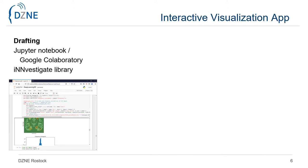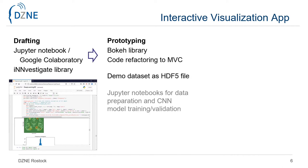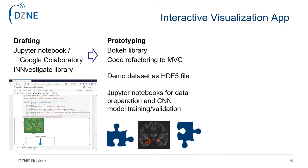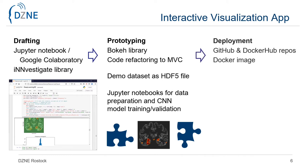For building the visualization framework, we first started with Jupyter Notebooks on our CUDA workstation and Google Colab for the initial drafting of image processing procedures. We then selected the Bokeh library for visualization, which provides a website frontend to interact with the relevance maps. We further refactored the code following the model-view-controller paradigm and created a demonstration dataset in HDF5 format. As documentation, we also provide Jupyter Notebooks containing the source code for preparing the input data for model training and validation.